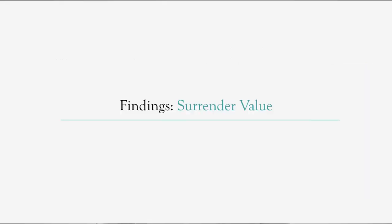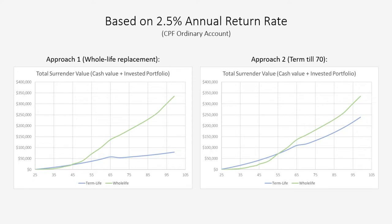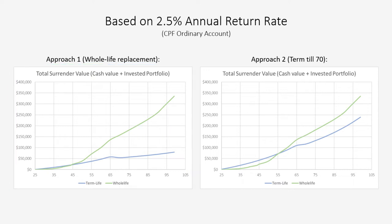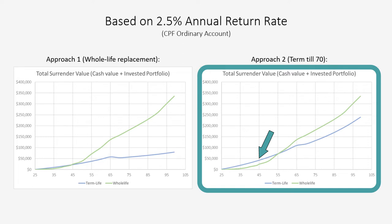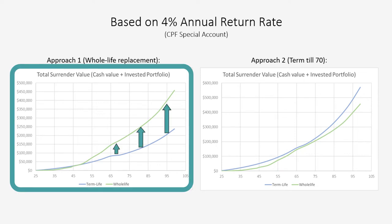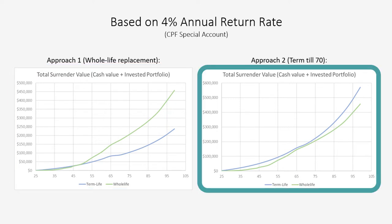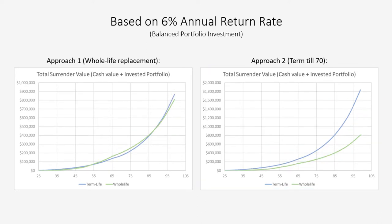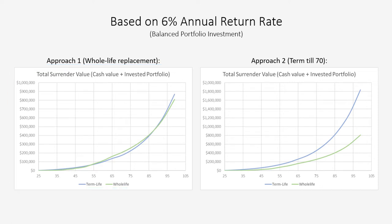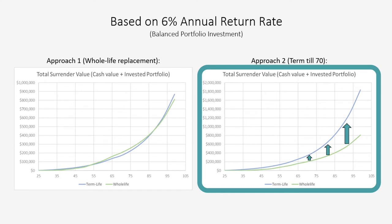Next, we look at the surrender value — the sum of the estimated cash value of the insurance policy and the estimated investment value accumulated. At a 2.5% return, for Approach 1, a whole life plan provides a higher surrender value throughout; for Approach 2, term life provides a higher surrender value before age 55, after which whole life takes over. At 4%, for Approach 1, whole life provides a higher surrender value throughout; for Approach 2, term life provides a slightly higher surrender value throughout. At 6%, Approach 1 shows similar surrender value behaviour between term and whole life, while for Approach 2, term life yields a higher value throughout.